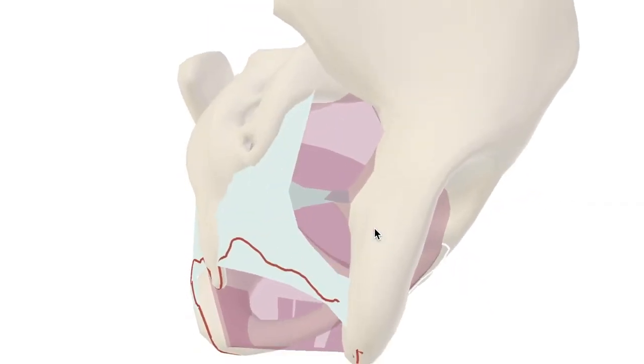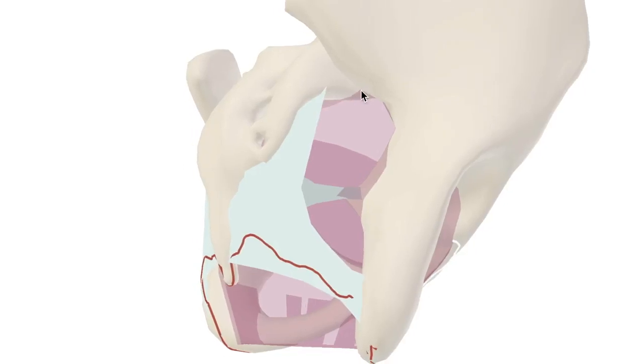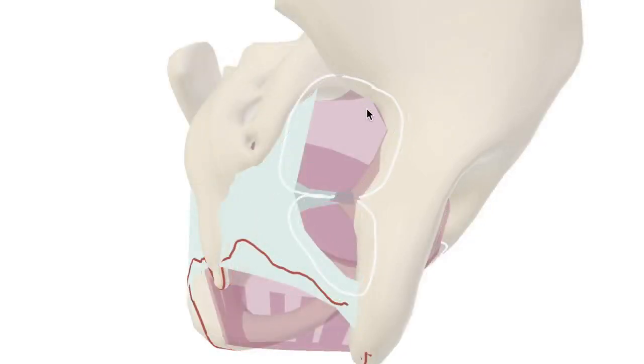Then the two foramina bordered by these ligaments. This is the greater sciatic foramen and the lesser sciatic foramen, named after the greater and lesser sciatic notches.